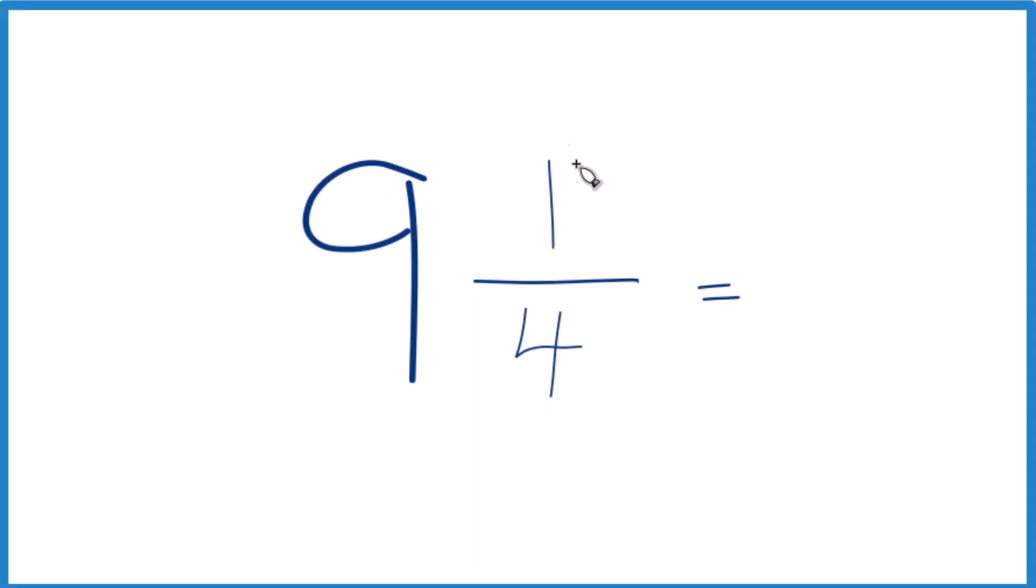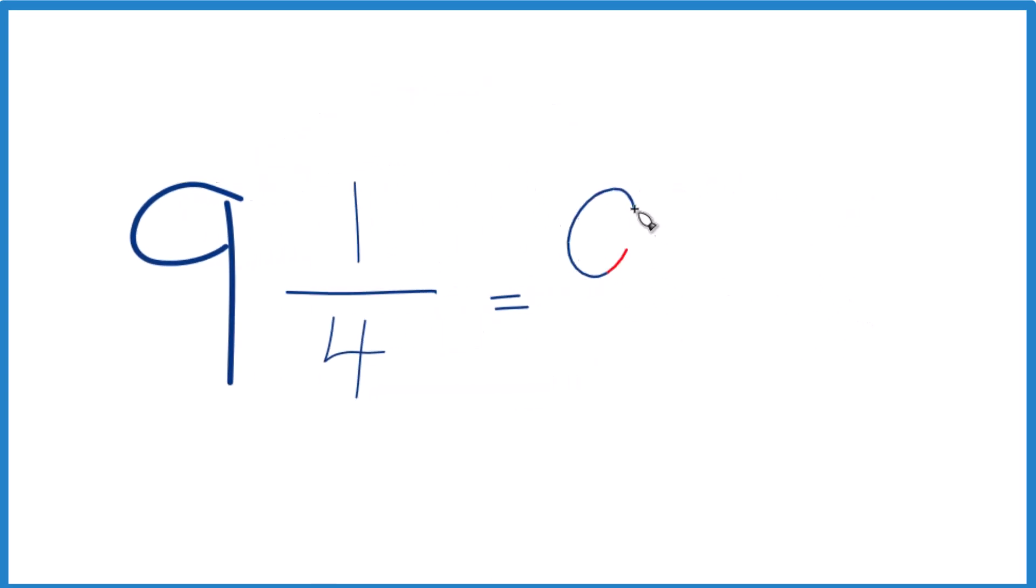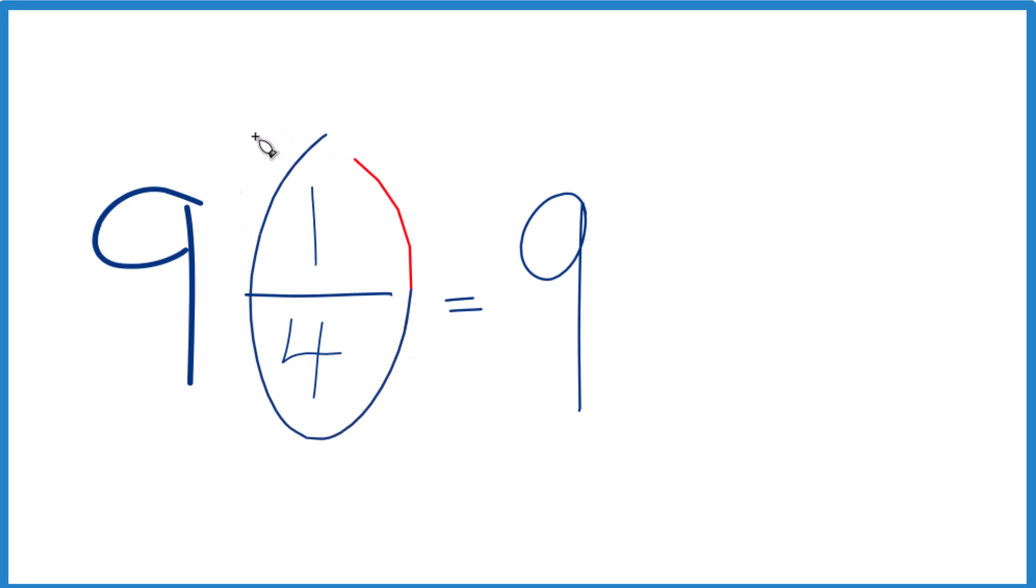So let's take and convert the fraction 9 and 1/4 to a decimal. I'll show you how to do that. So we have 9, that's a whole number. Let's just put 9 here and then focus on converting 1/4 to a decimal.